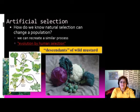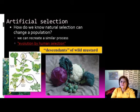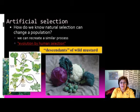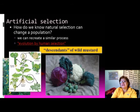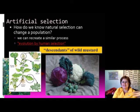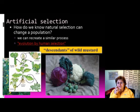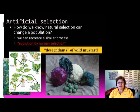Artificial selection is an interesting concept that demonstrates natural selection is real — humans can create a very similar process by deliberately picking and choosing traits, thereby influencing evolution. That brings this segment to a close at about 19 minutes.